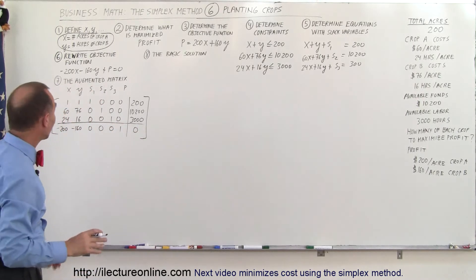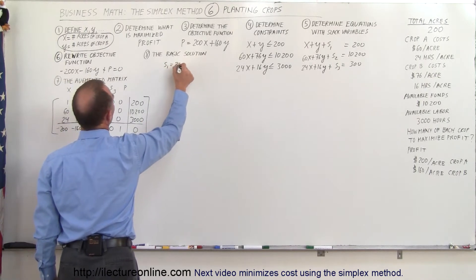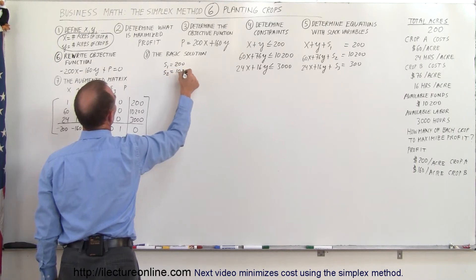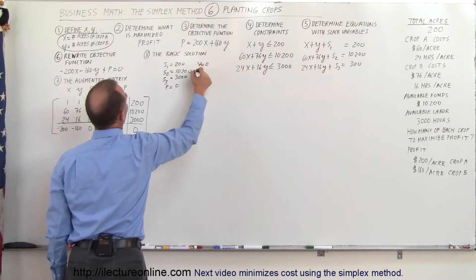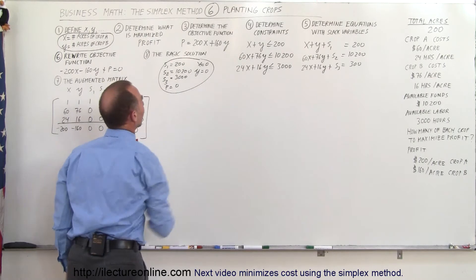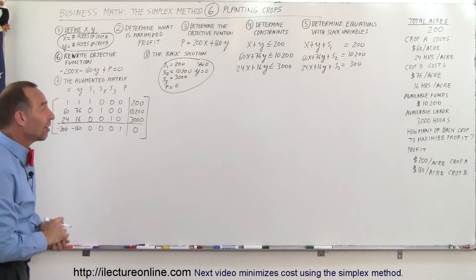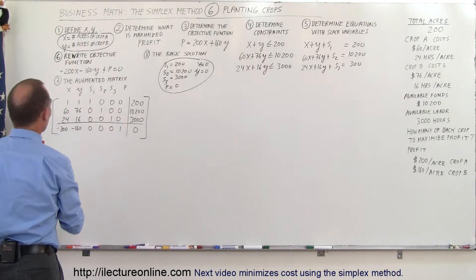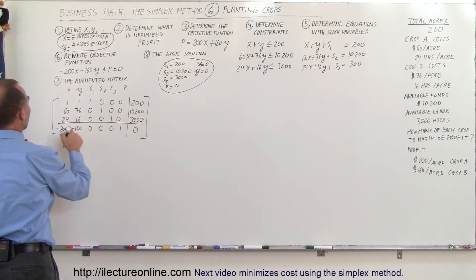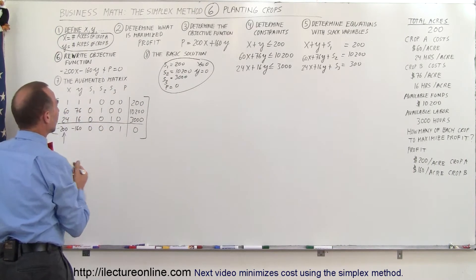The basic solution is as follows: x equals 0, y equals 0, so s1 equals 200, s2 equals 10,200, s3 equals 3,000, and profit equals 0. That's our basic solution to start with, but of course that's not where we want to end up because we make zero profit. To find the pivot point, we start with the column that has the biggest negative number, then divide each right-hand side value by the entries in that column to find the lowest ratio.